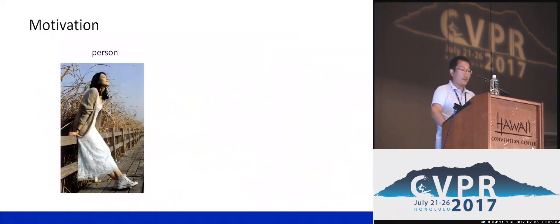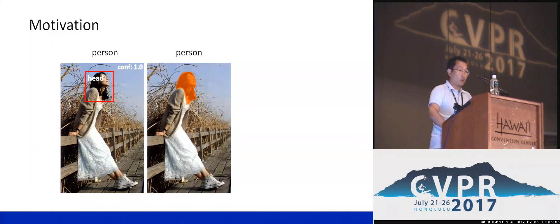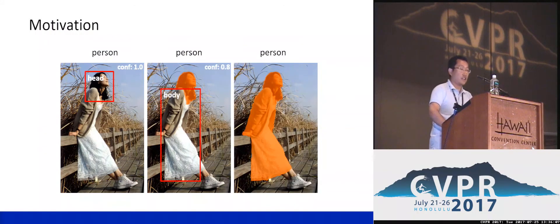Here we explain the main motivation of our work. We feed an image accompanied with its annotation for the person to the network. The network will discover some evidence to correctly classify the image as a person. In general, the head of the person is the most discriminative part. If we remove this part from the image, the network will try to discover other evidence, such as the body part. With continuing removing some other part, other regions such as the foot will be discovered to support the image-level annotation.